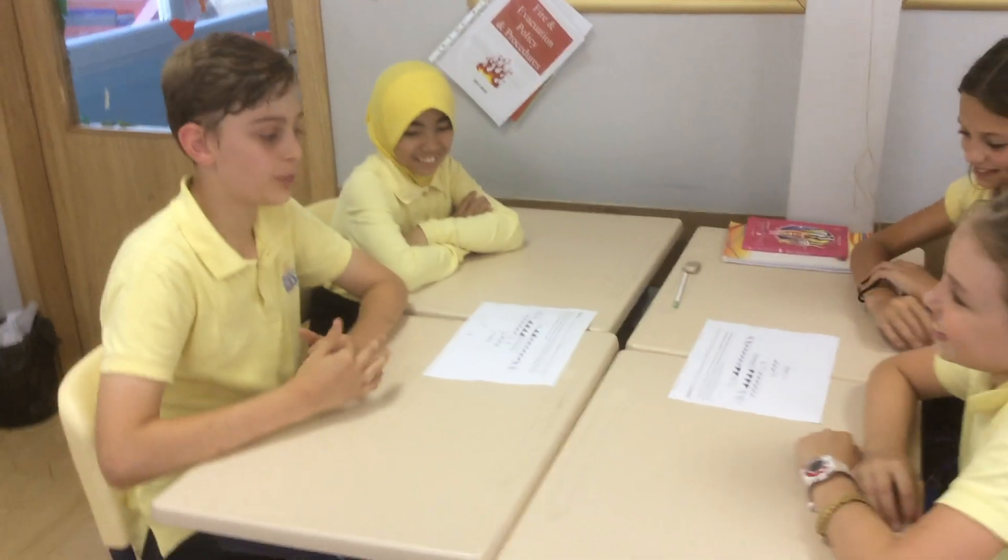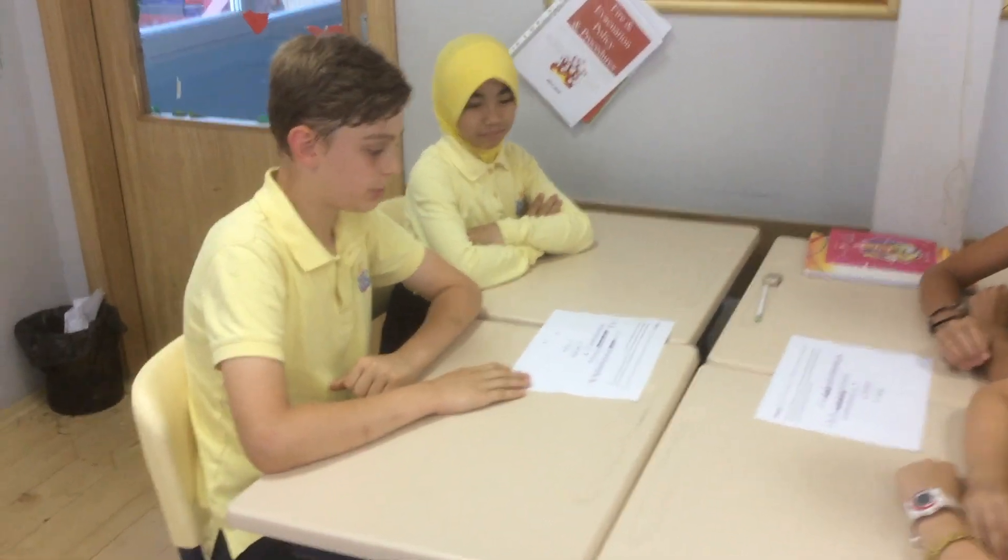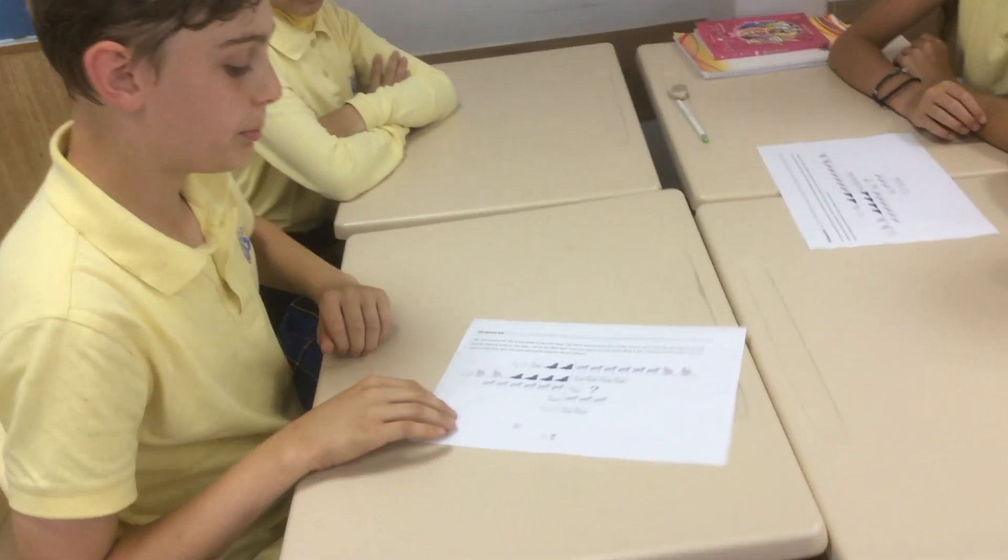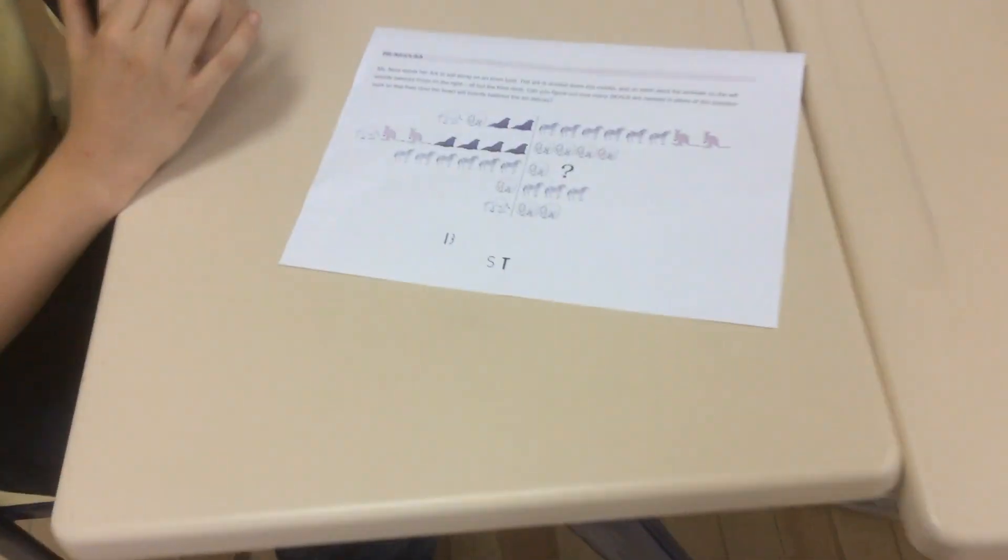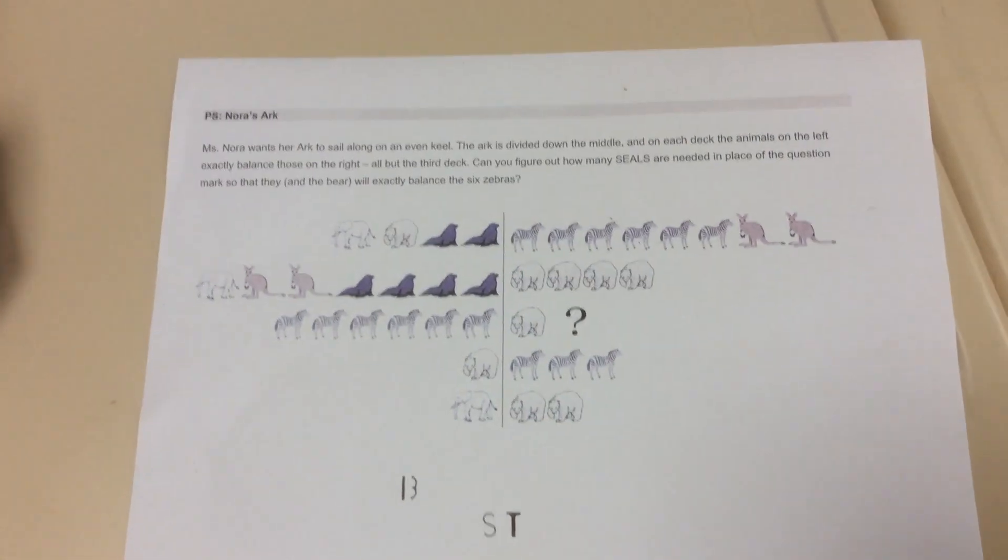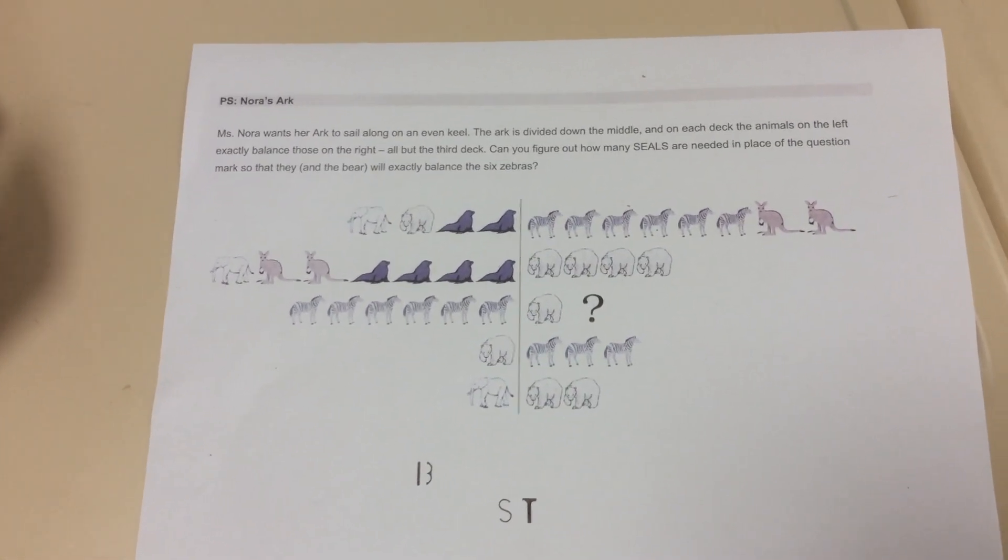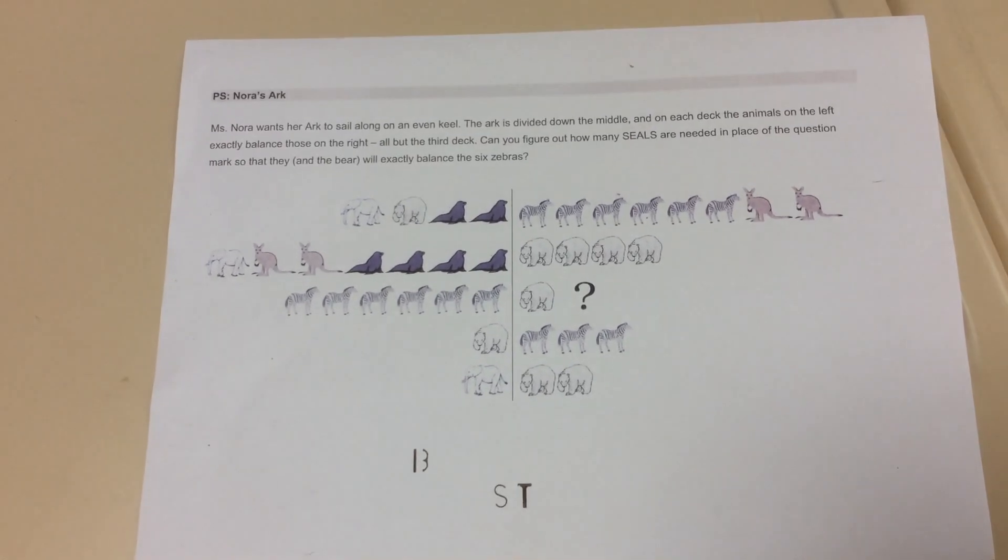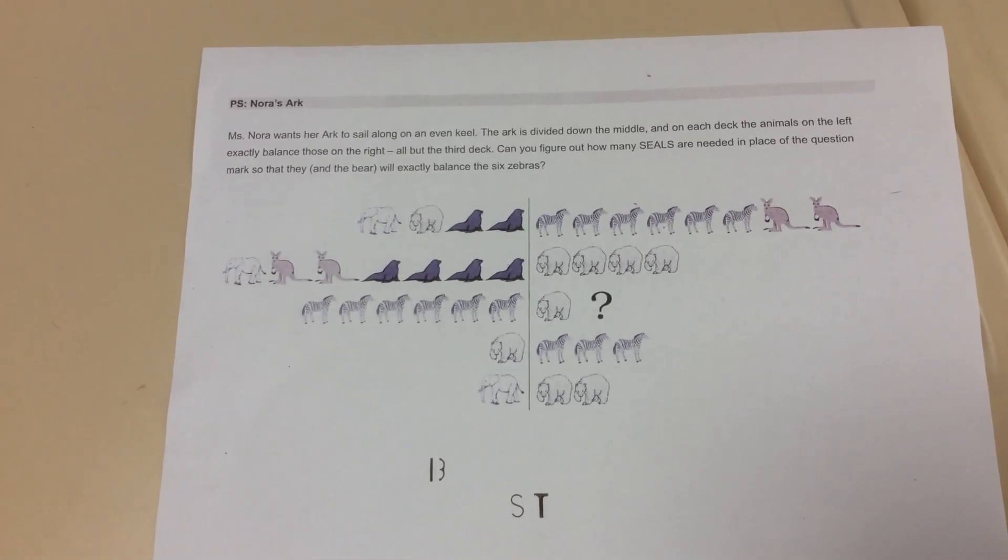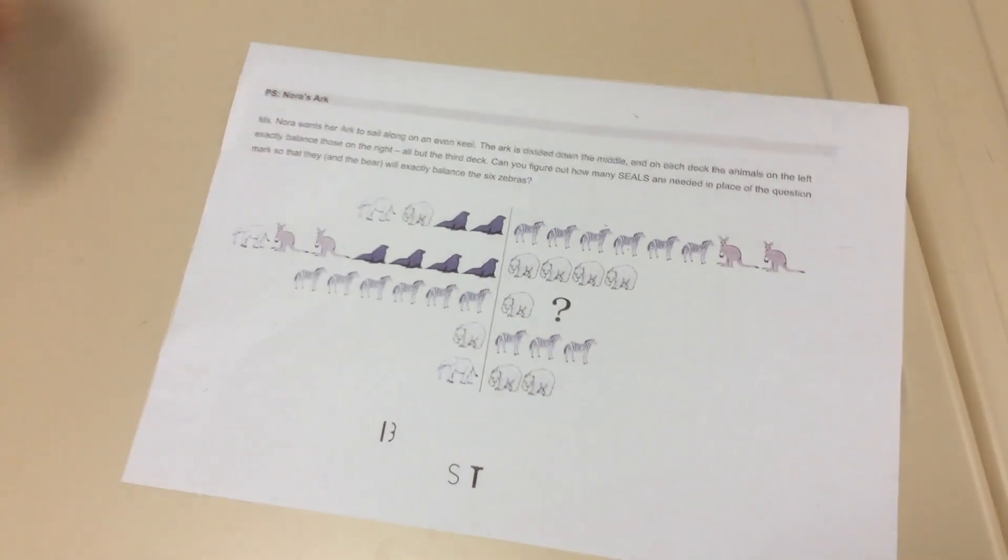We are going to use one of our keys of success to solve a math problem. The math problem is that on a boat someone is putting animals. She needs for both sides to be equal and we have to figure out how many seals are needed here to make it equal.